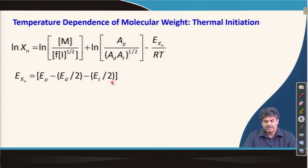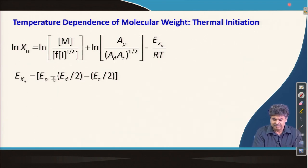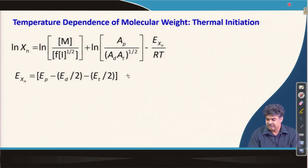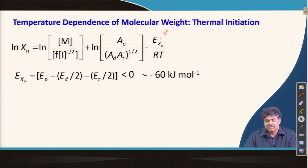The values were provided in the last lecture. In this case, there is a negative sign — unlike the positive sign seen for the rate of polymerization — making this composite activation energy a negative quantity, approximately minus 60 kilojoules per mole. This means that with increasing temperature, the molecular weight or degree of polymerization actually decreases.